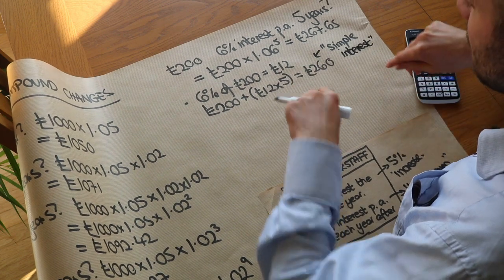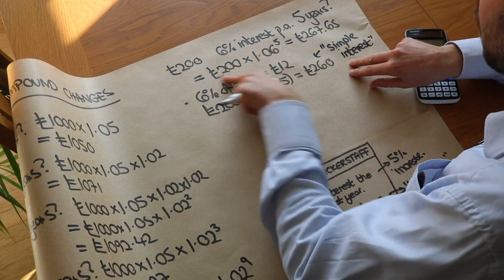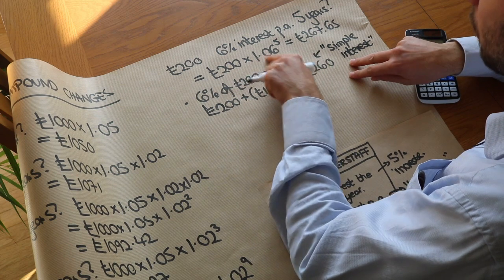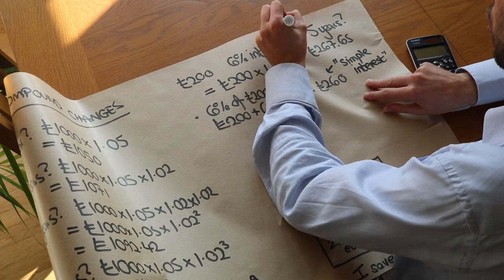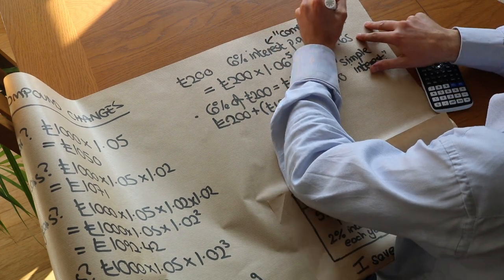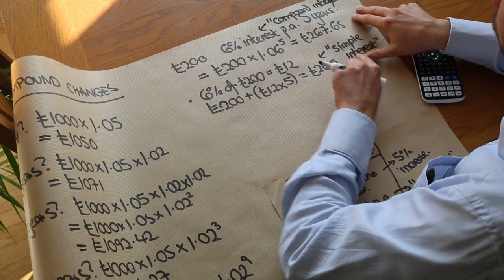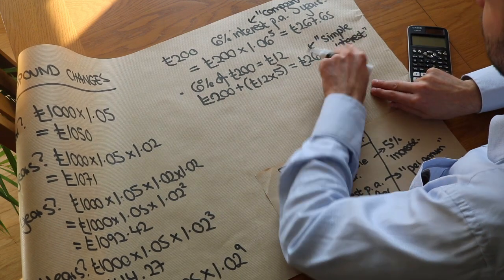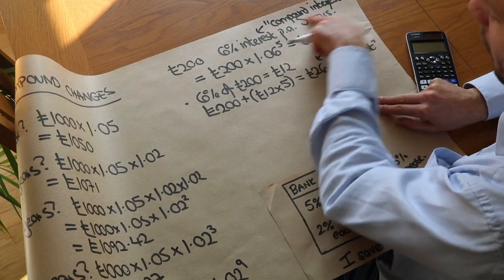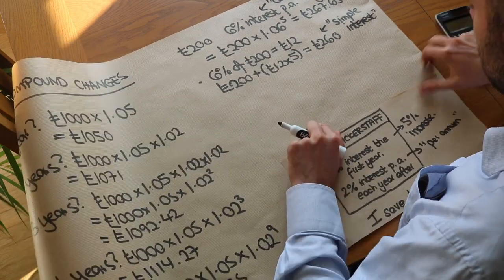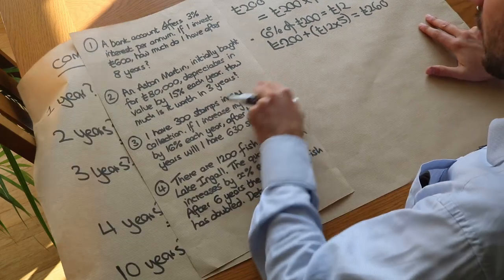Whereas if you're getting 6% of what you currently have, you multiply by 1.06 to the power of five — that's known as compound interest. I've only ever seen one exam question using simple interest, and that was over a decade ago. You should always assume compound interest unless they state otherwise. Now let's use that to solve some exam-style questions.